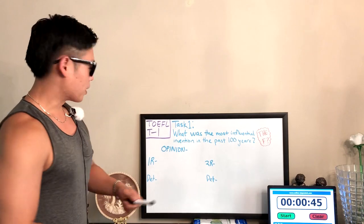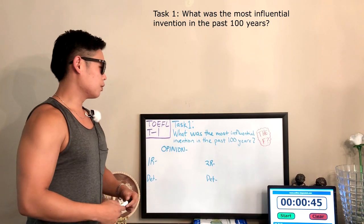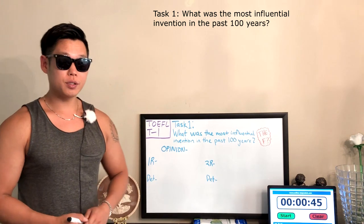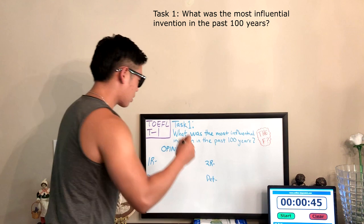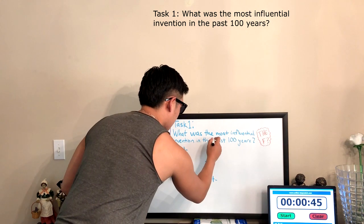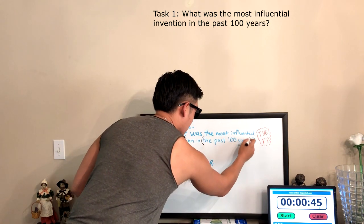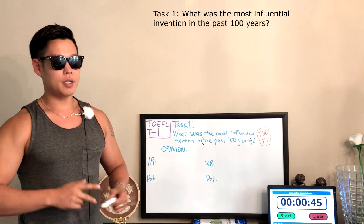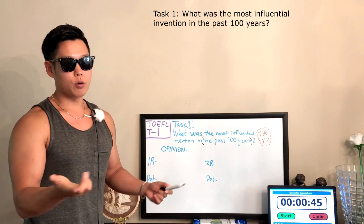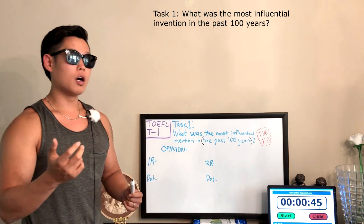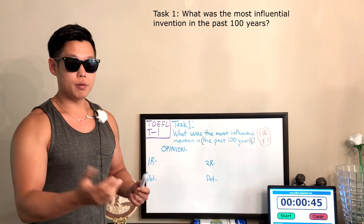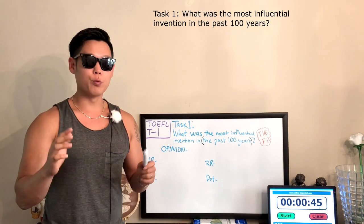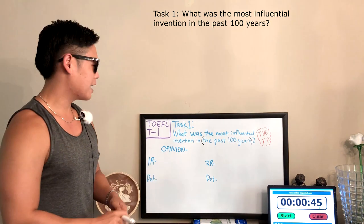Okay, task one. What was the most influential invention in the past 100 years? Okay, so this question is really hard because of this part right here. That puts a huge limit on your opinion because you can't say anything like the wheel, fire - well, fire is not really an invention - the light bulb, paper and so on. So they have to be pretty modern, pretty recent inventions, which is why it's, like I said, more challenging.